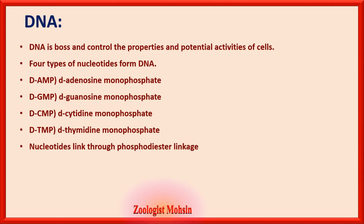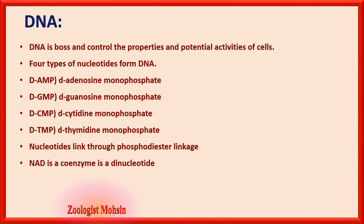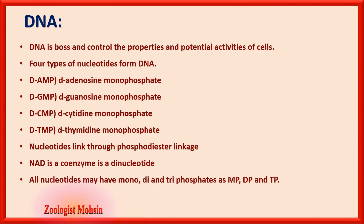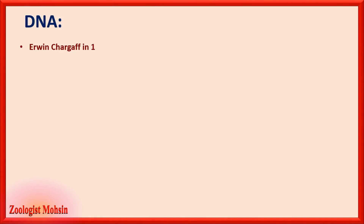Nucleotides link through phosphodiester linkage — one nucleotide links to another through a phosphodiester bond via phosphoric acid. NAD (nicotinamide adenine dinucleotide) is a coenzyme and is a dinucleotide — this MCQ has appeared in past papers. All nucleotides may have mono-, di-, and triphosphate forms: for example AMP, ADP, ATP; and similarly GMP, GDP, GTP.